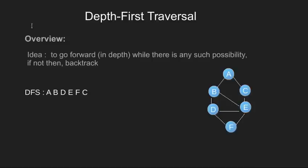First, let us have a quick overview of what depth first search is. The basic idea behind this traversal is that given a graph, we have to go forward depth-wise while there is any such possibility. If not, then we have to backtrack.